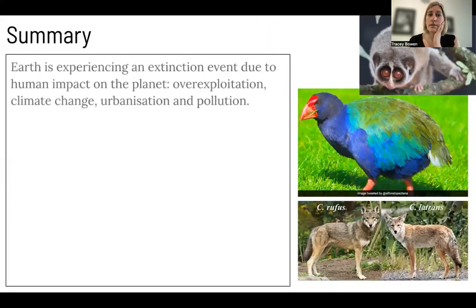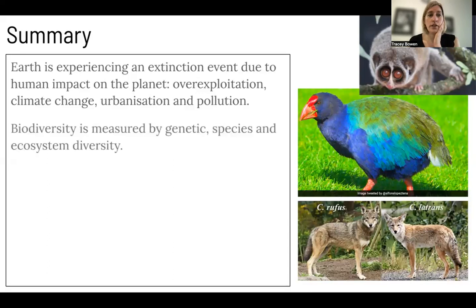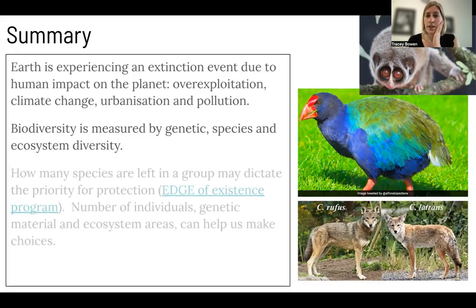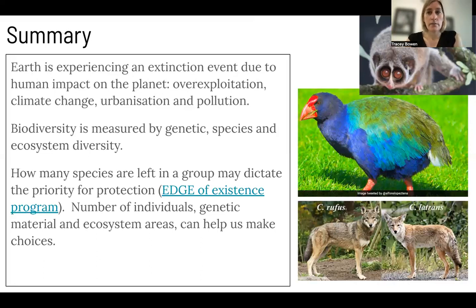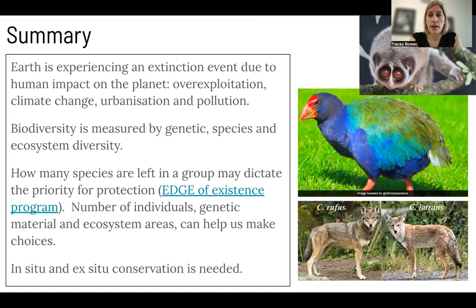To summarize: Earth is experiencing the sixth mass extinction event due to human impact — over-exploitation, climate change, urbanization, and pollution. Biodiversity is measured by looking at genetic, species, and ecosystem diversity. How many species are left in a group may dictate the priority for protection — the Edge of Existence program looks at individual numbers, genetic material, and ecosystem areas to help make decisions about where to focus attention and money. We need to use both in situ and ex situ strategies to preserve as many species as we possibly can going forward.